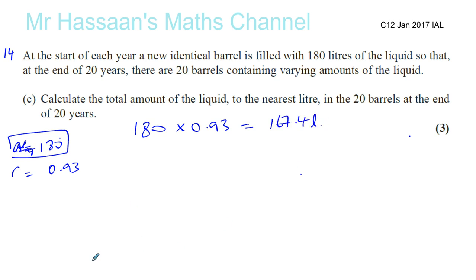So that first barrel, by the end of the first year, it's going to have 167.4 litres. And then by the end of the second year, it's going to go down. But at the beginning of the second year, you can say at the end of the first year, another barrel will also be added. So at the end of the first year, which is like the beginning of the second year, another barrel will be added, and that will go on for 20 times. So there will be 20 barrels added.